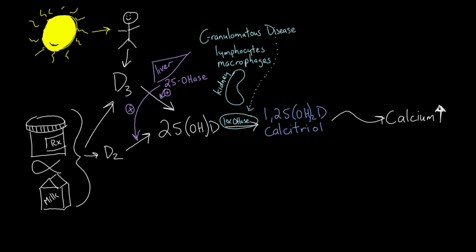Now you can imagine how, in granulomatous diseases and in lymphoma, overproduction of calcitriol will lead to increased intestinal calcium absorption and ultimately to hypercalcemia and hypercalciuria.